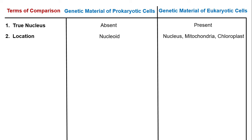In eukaryotic cells, genetic material is located in the nucleus, and in addition to the nucleus, it is also found in mitochondria as well as in chloroplasts.